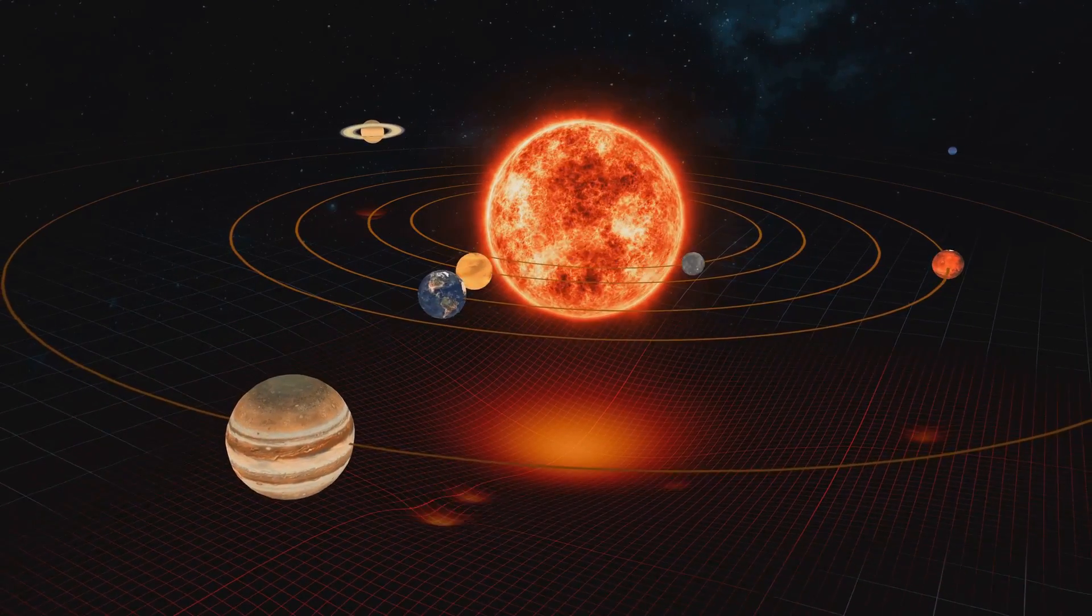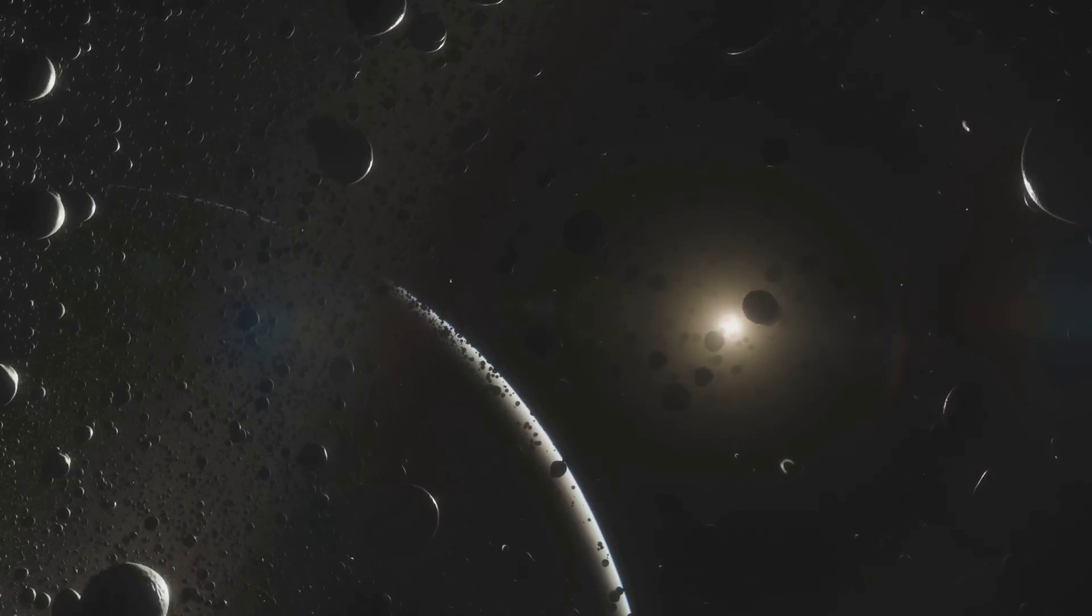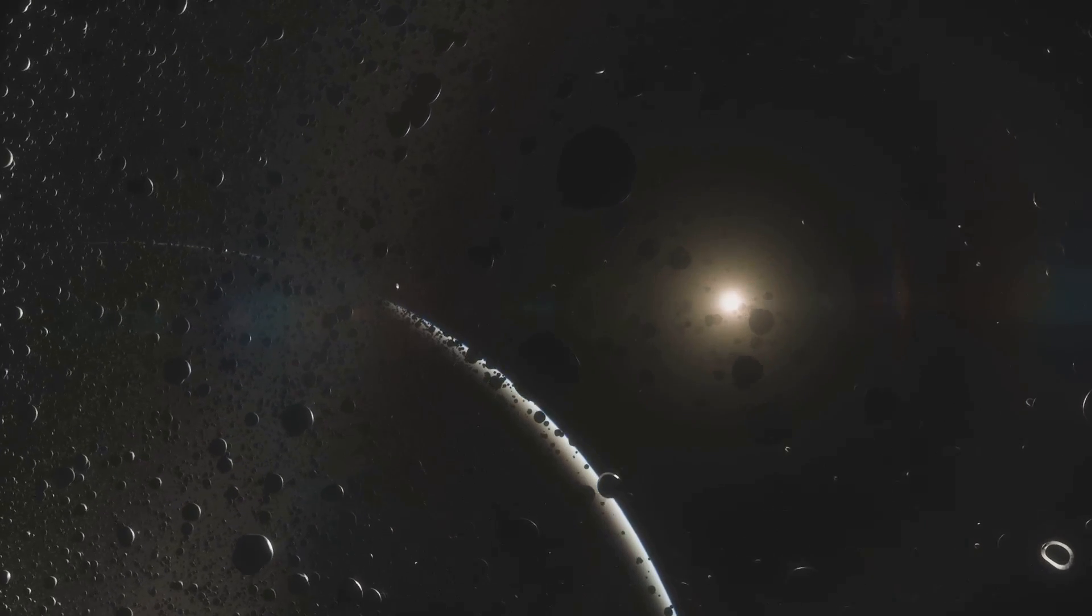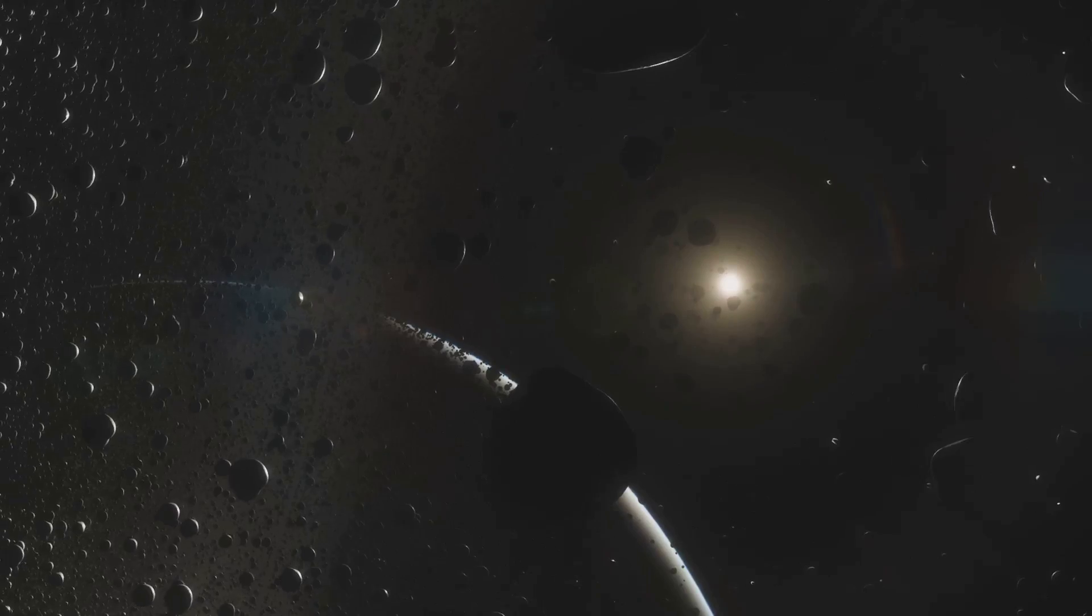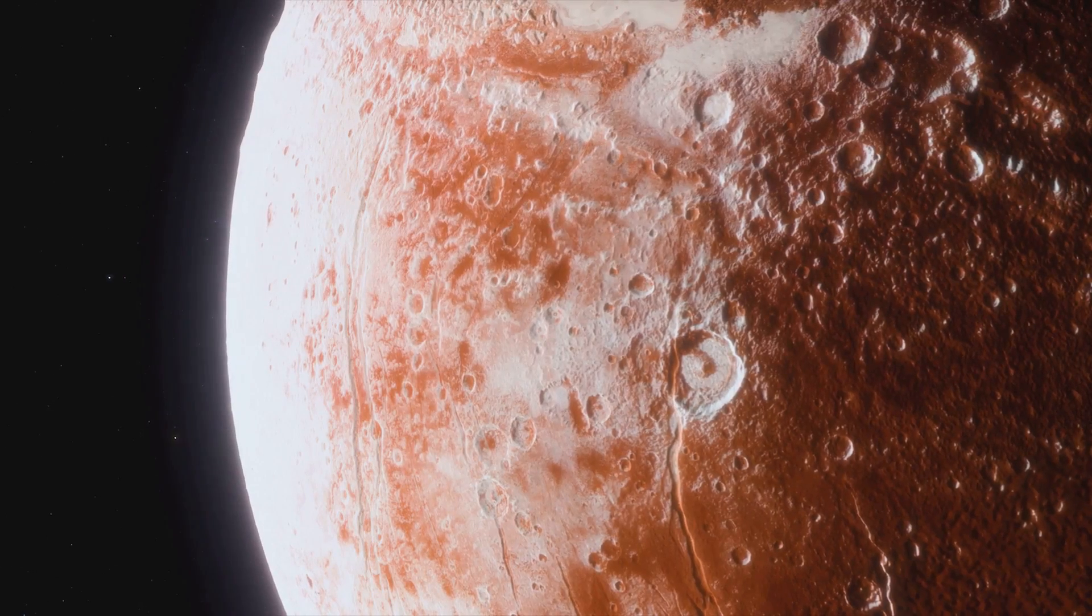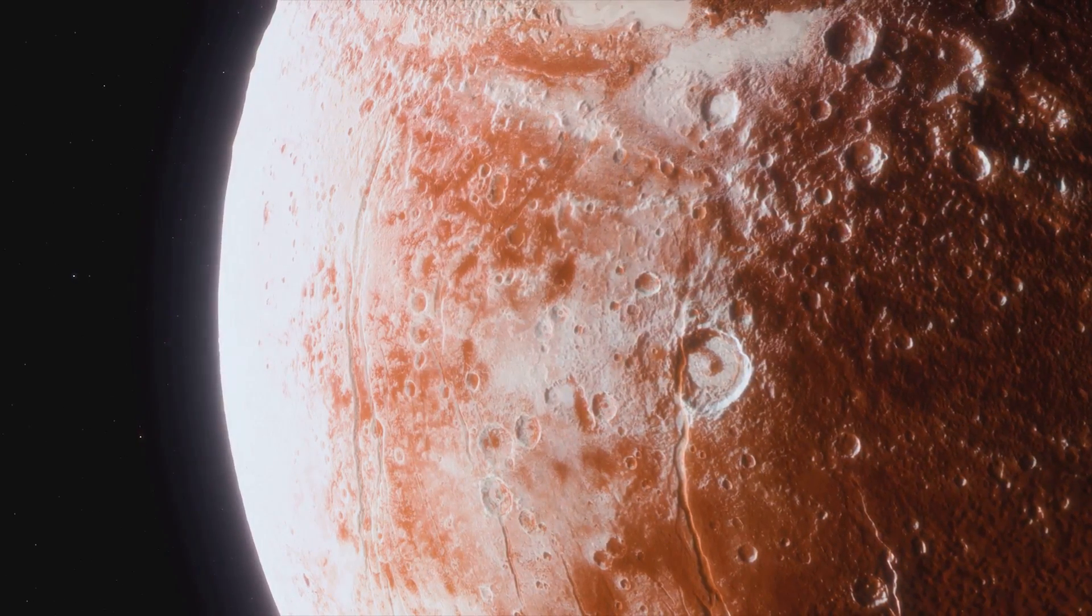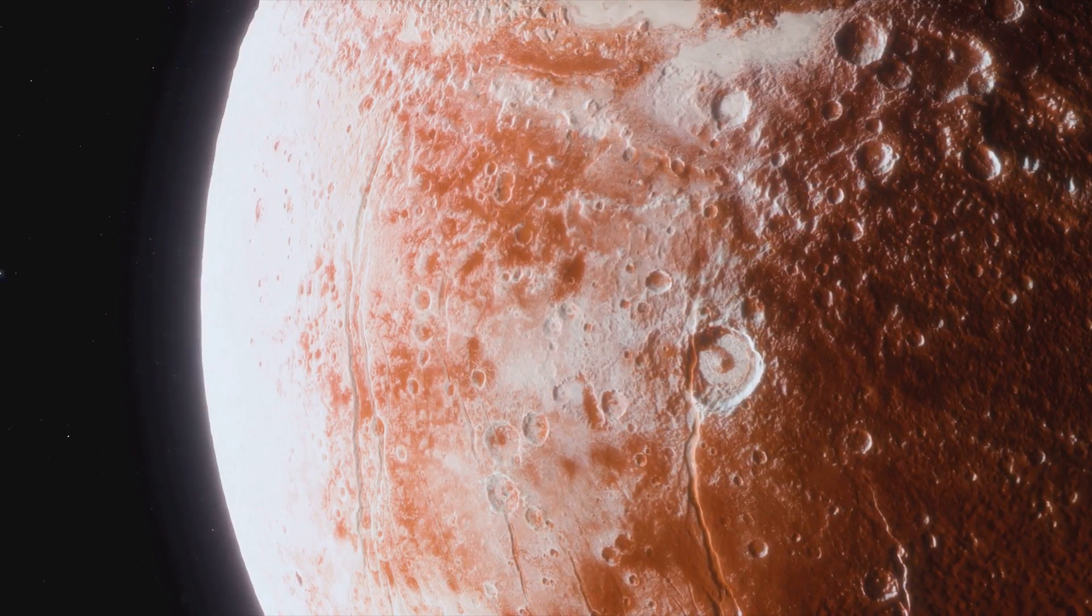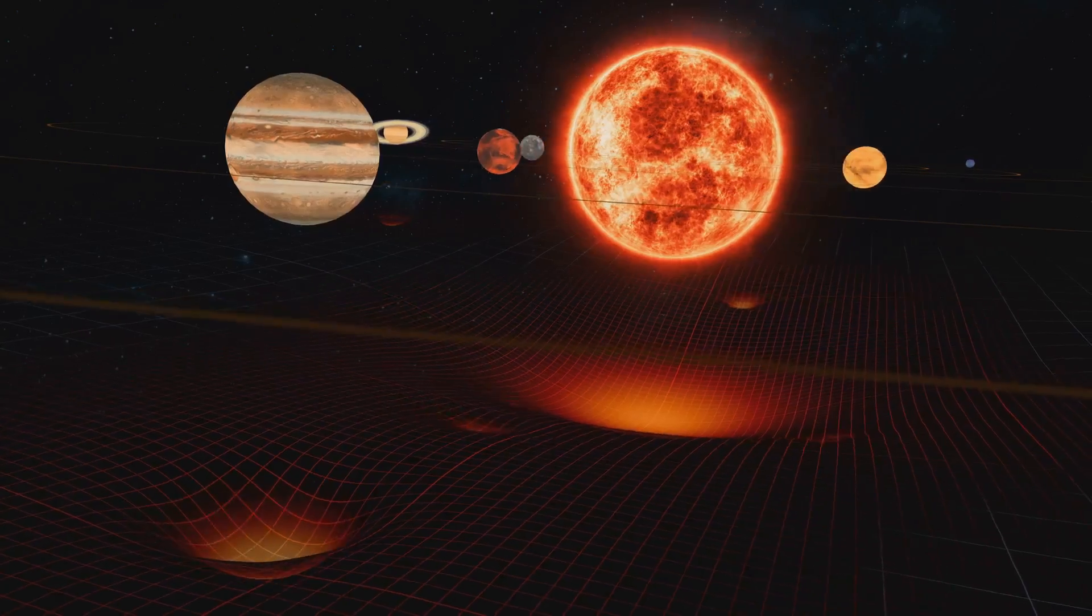Another theory posits that the planet's magnetic field is a relic from a time when the core was fully molten and the planet rotated more rapidly. This ancient magnetic field, the theory suggests, got frozen into the crust as the core cooled and solidified.